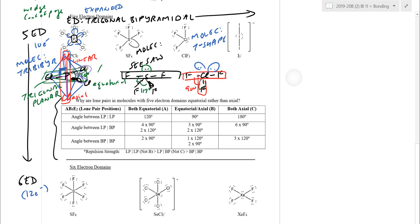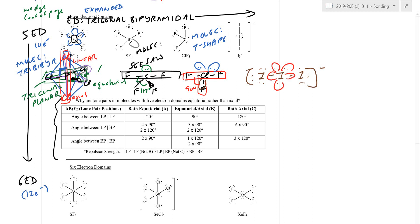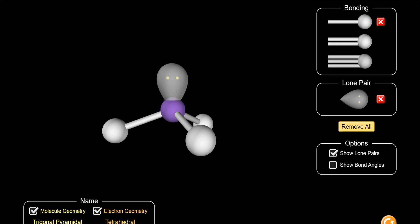When all three equatorial positions become lone pairs (two bonds, three lone pairs — like triiodide I3⁻), we're left with just the two axial positions straight across each other. That gives us linear geometry with a 180° bond angle. So we can actually arrive at linear from a five-domain base. For a correct VSEPR diagram you don't necessarily need to include all the lone pairs, but while learning it's helpful to see we're still based off five domains.